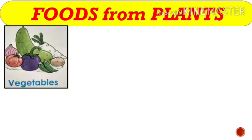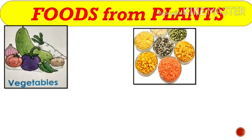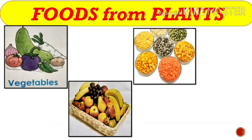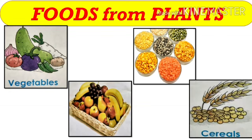Foods from plants. Can you tell me some food items that we get from plants? They are vegetables, pulses, fruits and cereals. Cereals means wheat, barley, maize, soybean, etc.